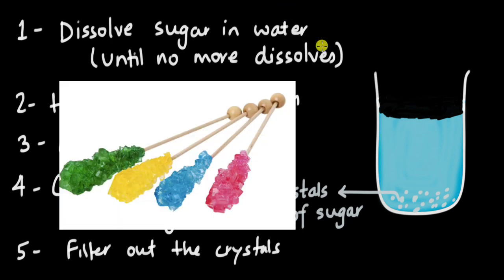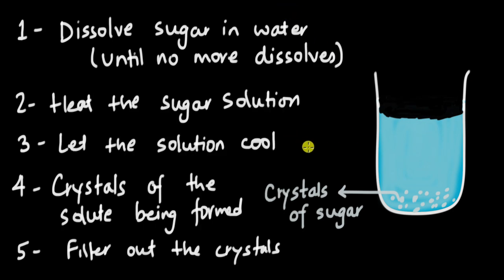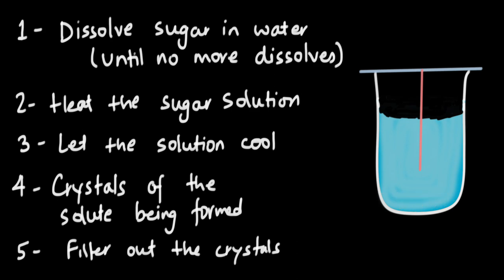There is one more way to get the rock candy that you saw in the beginning. As we let the solution cool, we can hang a string by tying it to a pen and let it hang in the solution. Make sure the string is not touching the base of the beaker but is somewhere in between. When you let the solution cool, you see these crystals being wrapped around the string. Then you can take it out, and there's your sugar candy.